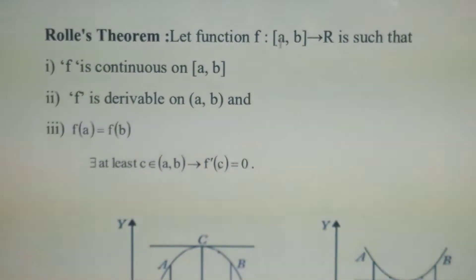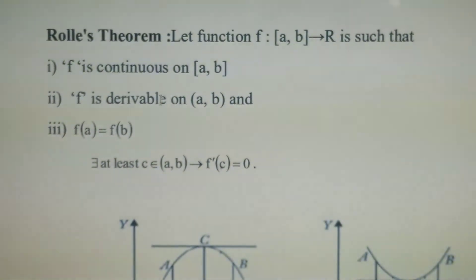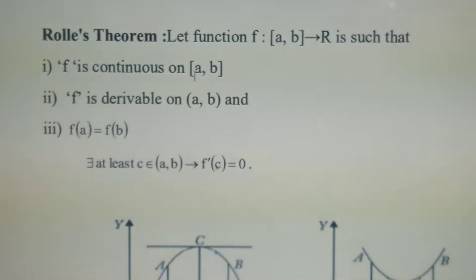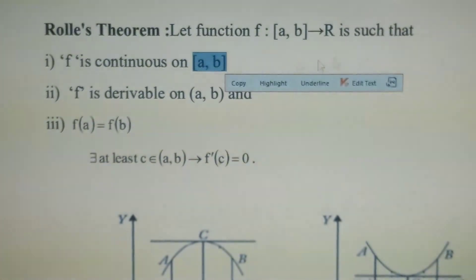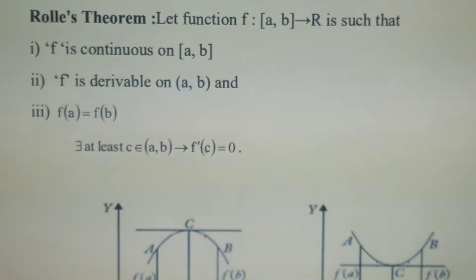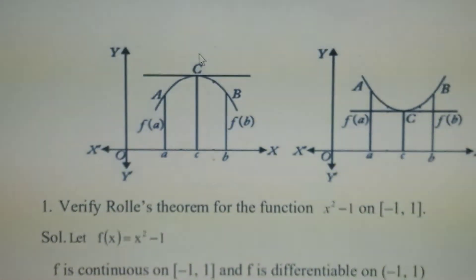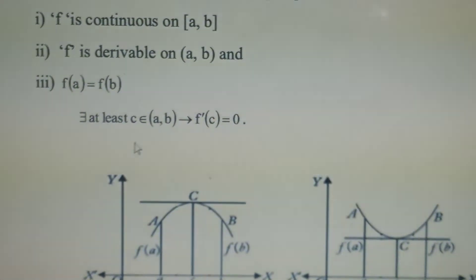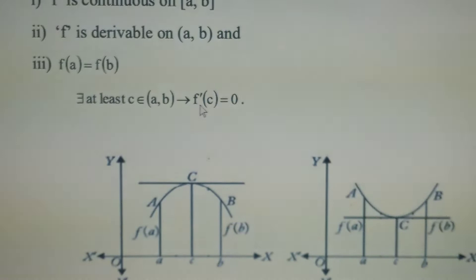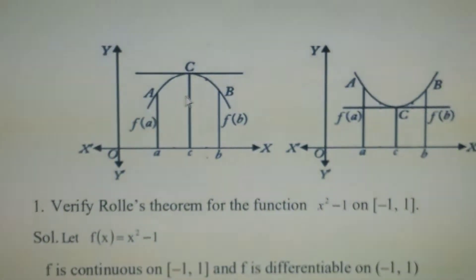f is mapping from closed interval [a,b] to ℝ such that f is continuous on closed interval [a,b], f is differentiable on open interval (a,b), and f(a) = f(b). Then there exists at least one c belonging to (a,b) such that f'(c) = 0.